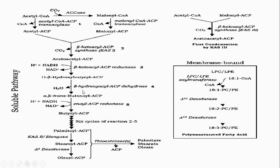Then we have a loss of one molecule of water by the action of beta-hydroxy-ACP dehydratase, forming a compound known as alpha-beta-trans-butenoyl-ACP. This compound is then reduced again using NADH, in the presence of enoyl-ACP reductase, to give butyroyl-ACP.